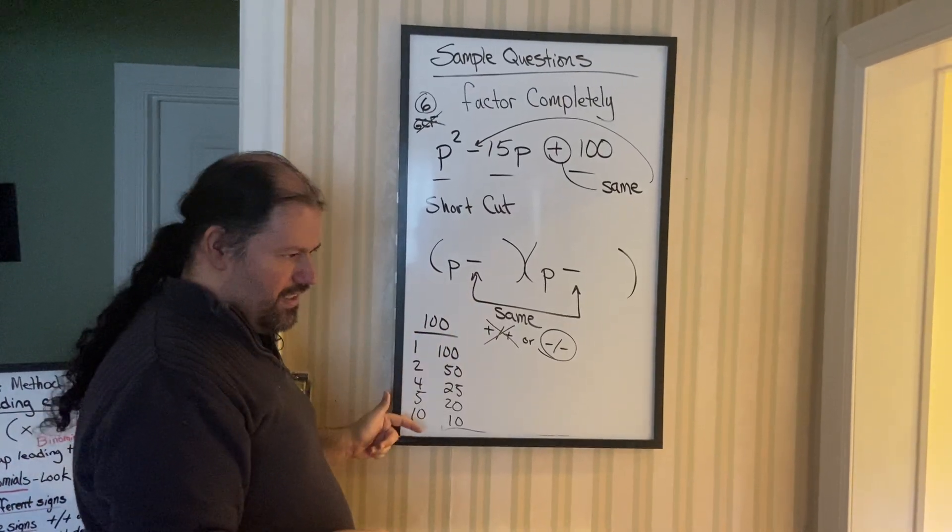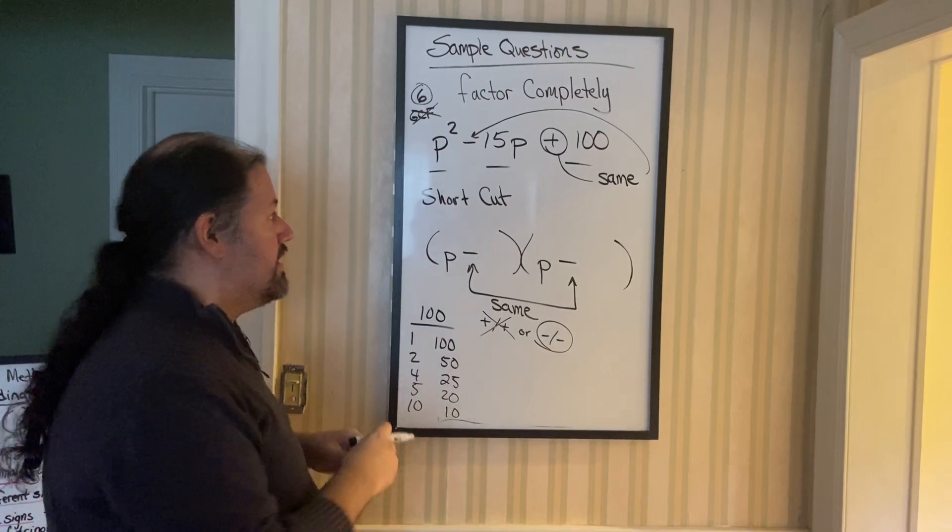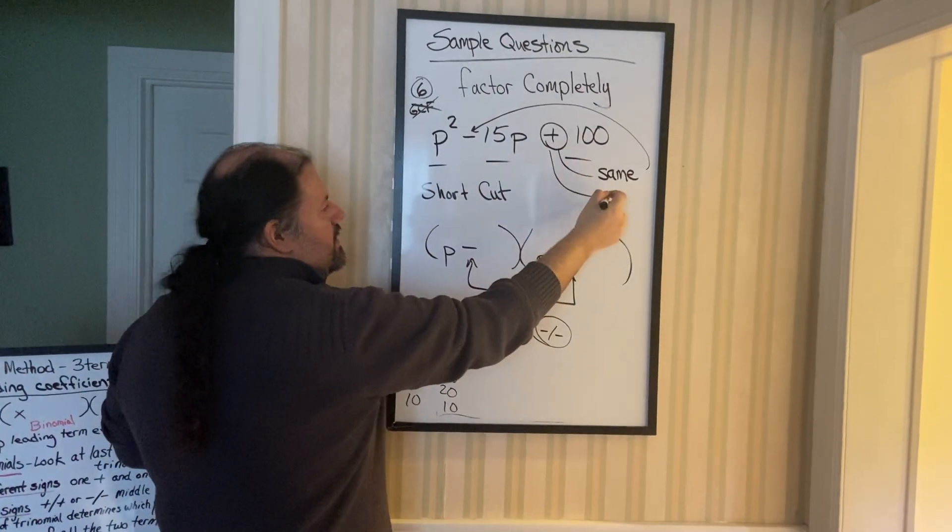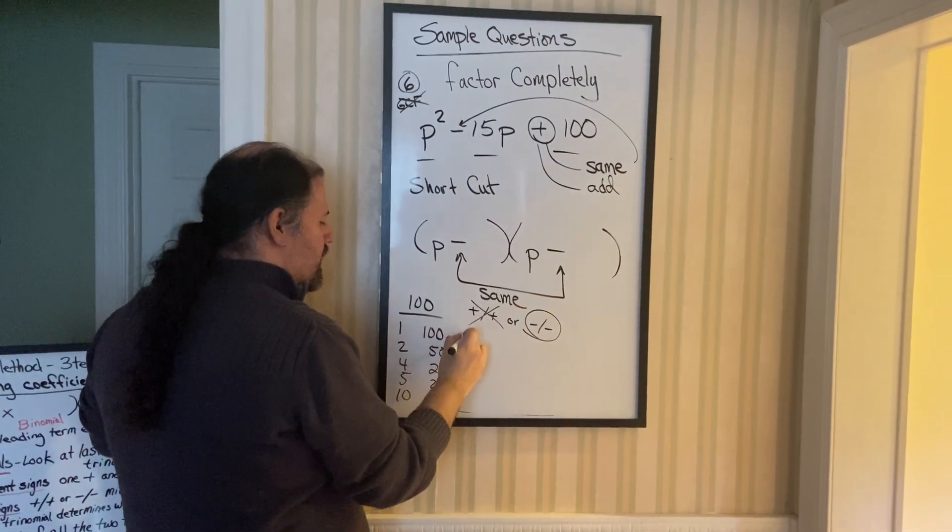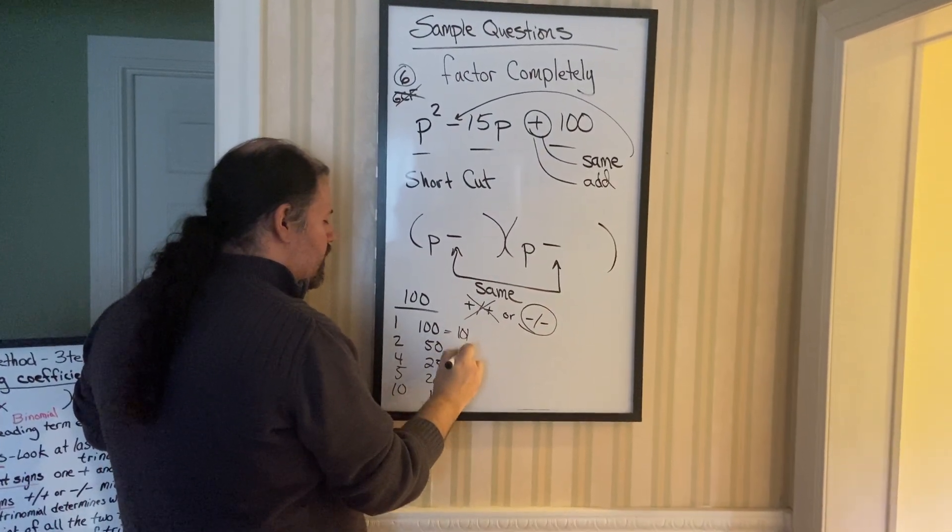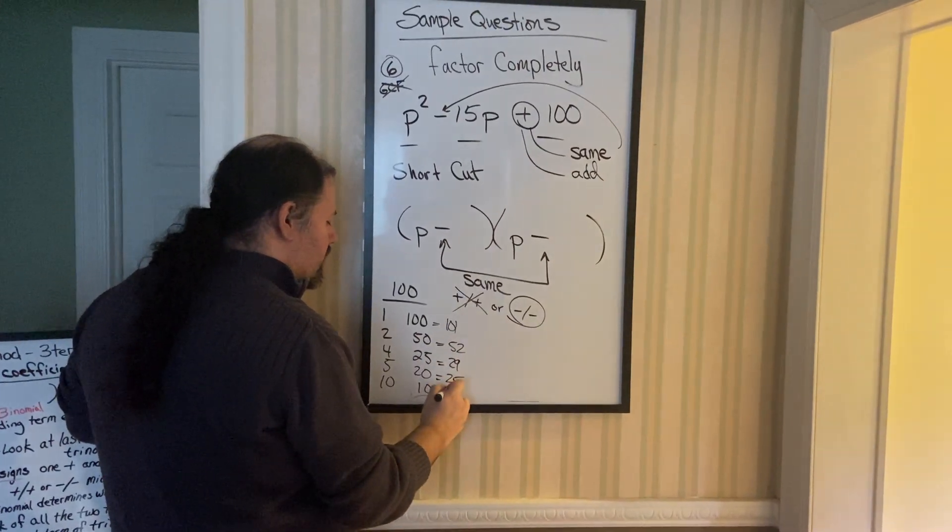So I have five combos to check from. Remember, once we get our list, which was step three. Step four, we're going to either add or subtract a list. Because this is a plus, we're going to add. So we got 101, 52, 29, 25, 20.